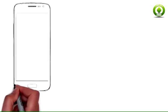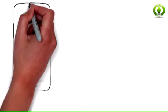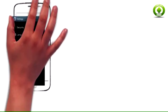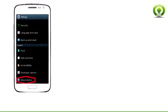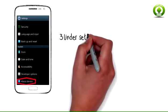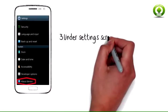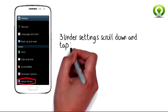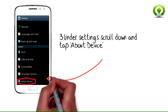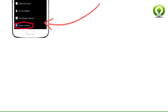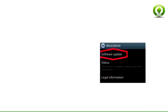Step 3: Under Settings, scroll down and tap About Device. Step 4: Then tap Software Update.